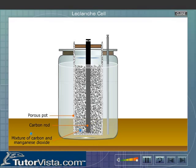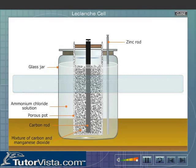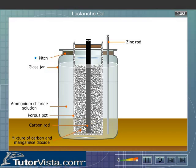These are placed in a glass jar containing saturated ammonium chloride solution. The ammonium chloride solution is the electrolyte, and the carbon and zinc rods are the electrodes. The mouth of the glass jar is sealed with pitch so that the ammonium chloride does not seep out.